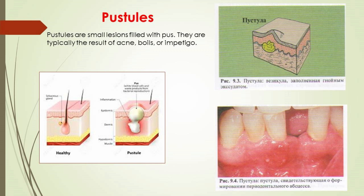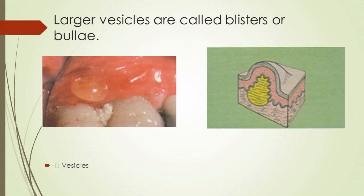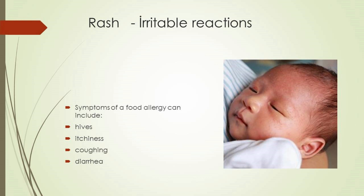Larger vesicles are called blisters or bullae — elevated blisters containing clear fluid under one centimeter in diameter. Rashes are lesions that cover small or large areas of skin and can be caused by an allergic reaction. A common allergic reaction rash occurs when someone touches poison ivy. Breastfed babies may develop a rash if they are allergic to a food group their mother is consuming; symptoms can include hives, itchiness, coughing, and diarrhea.